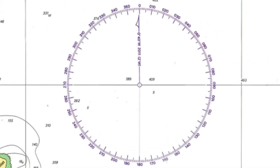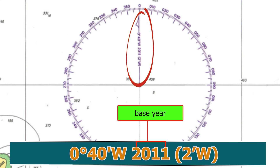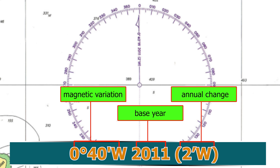In the middle of the compass rose, you'll find important info like this: 0 degrees 40 minutes west 2011, and 2 minutes west annual change. This means that in the year 2011, the magnetic variation at that spot was 0 degrees and 40 minutes west of true north, and it's increasing westward by 2 minutes each year.